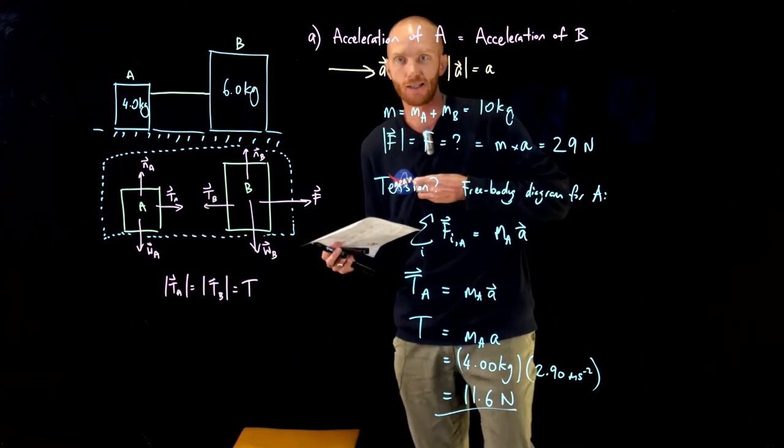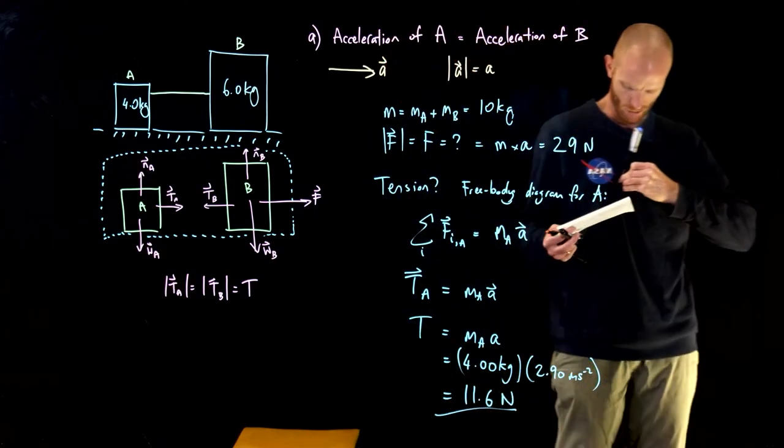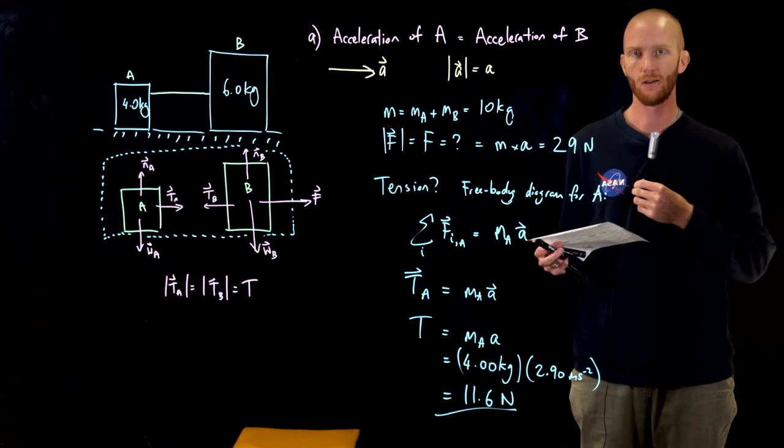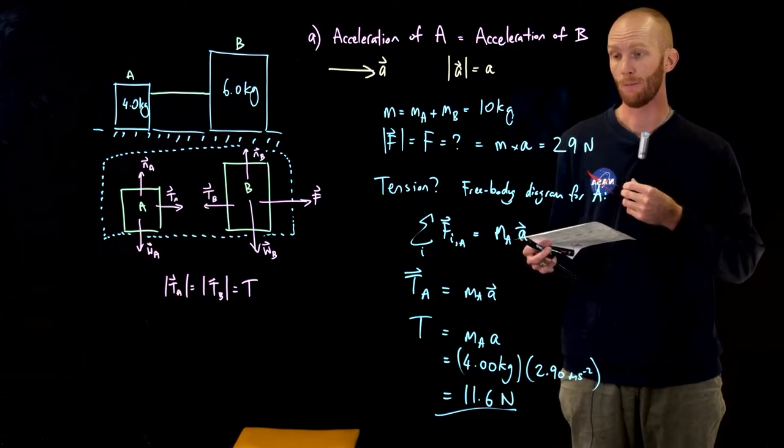So that means we can easily see that the tension in the string is way less than the amount that the person's pulling on the box with.